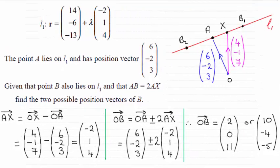Hi there. Now for this question we were told to find the two position vectors of point B, and you can see the answers are (2, 0, 11) or (10, -4, -5). You need both these answers by the way.